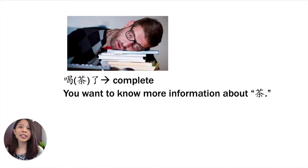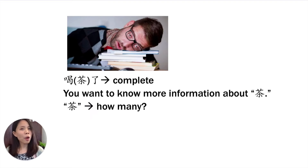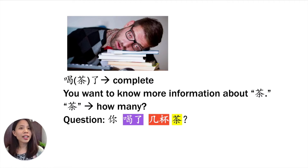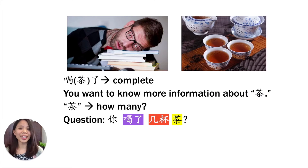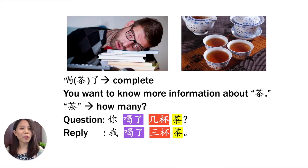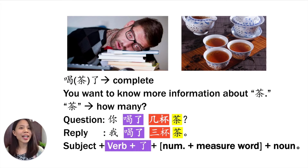Now we are curious about more information about 茶. So we can ask: 你喝了几杯茶? And how to reply — three cups: 我喝了三杯茶。 The structure is: Subject + verb + 了 + number + measure word + object. 我喝了三杯茶。